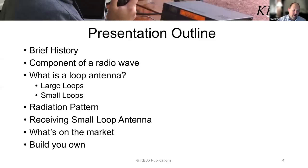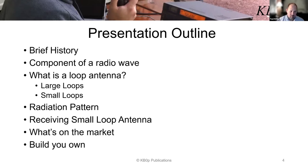The outline: I'm going to go over a brief history of loop antennas, then talk about the components of a radio wave, discuss what is a loop antenna, and quickly review the large loop and small loop. We'll go over the radiation pattern of both types, then talk about receiving small loop antennas — that's what this presentation is mostly about. I'll show you what's on the market and give you instructions on how to build your very own loop antenna, plus some web pages.